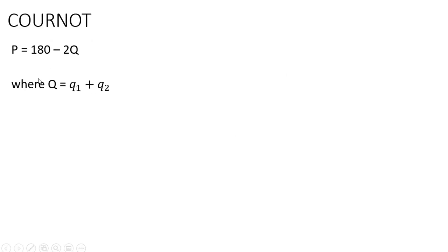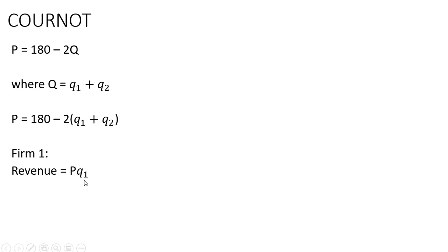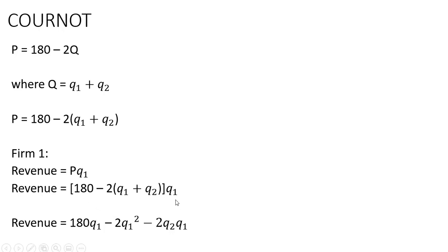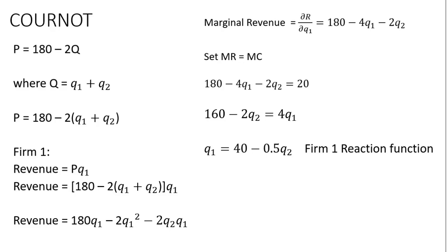Now Cournot. The inverse market demand is P = 180 - 2Q, and we recognize that total output Q equals Q₁ + Q₂. Substituting Q₁ + Q₂ in for Q, we get firm 1's revenue as price times firm 1's output. Replacing P with the demand equation: R₁ = 180Q₁ - 2Q₁² - 2Q₂Q₁. We get marginal revenue by taking the partial derivative of this revenue equation with respect to Q₁.